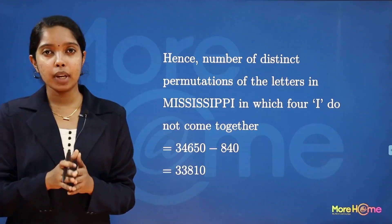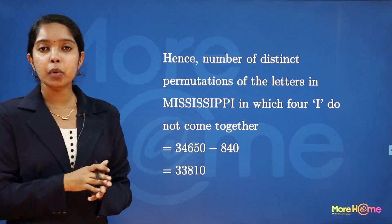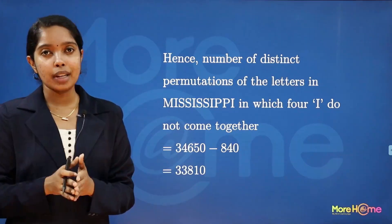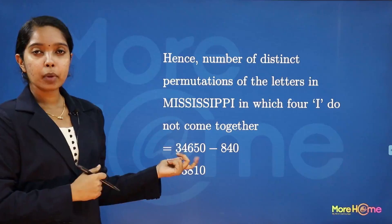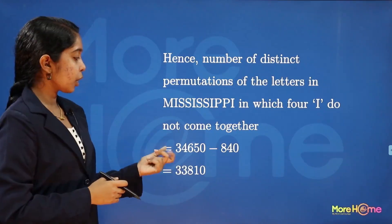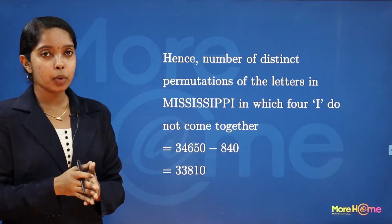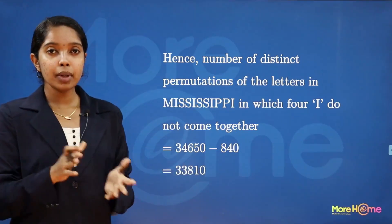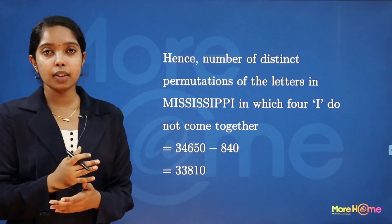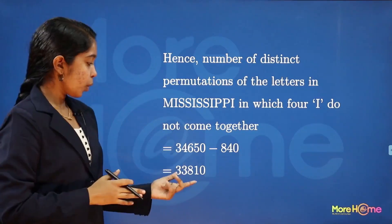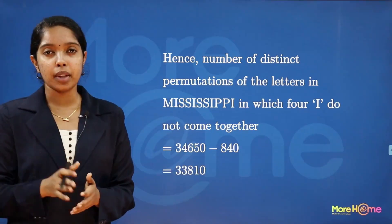The question asks for arrangements where the I's do NOT come together. So we subtract: total permutations minus permutations where I's are together. That is 34,650 minus 840, which equals 33,810. So 33,810 is the number of distinct permutations where the four I's do not come together.